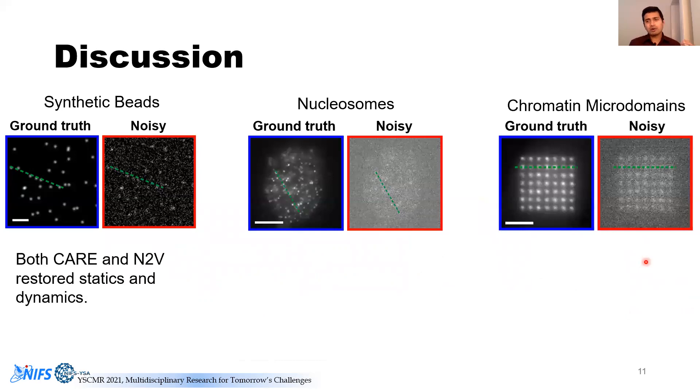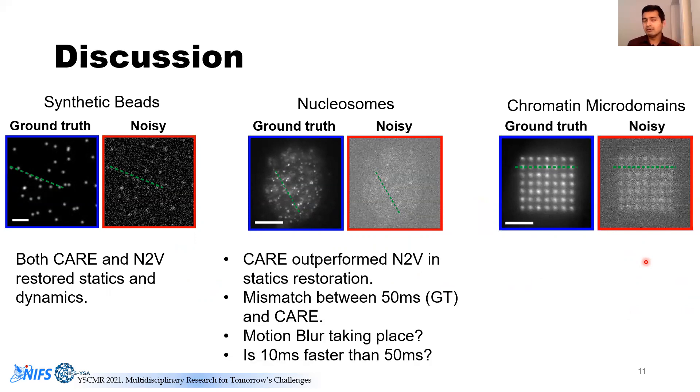Overall, what we see is that for synthetic model, both of these techniques are wonderful. But for the real data, there are some concerns that we need to answer because we are wondering if there is an effect of motion blur or if actually what we observe from this restoration is actually the truth. Those are some questions we have. In the chromatin microdomain example, both have done well, but CARE sort of outperformed the other.